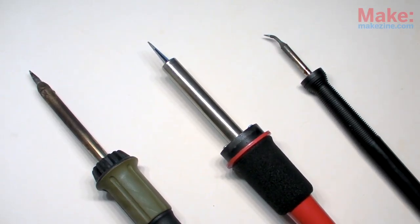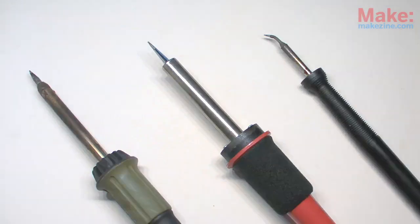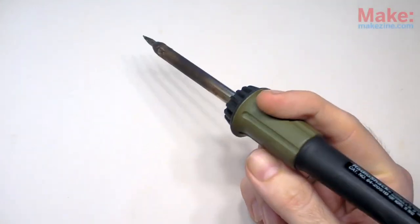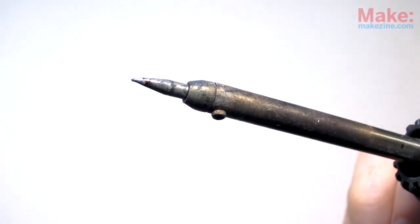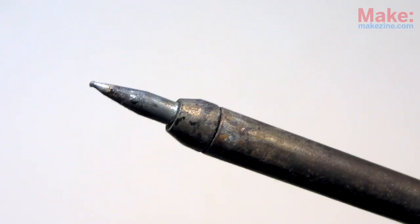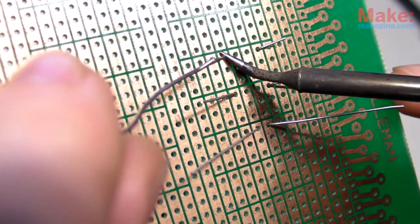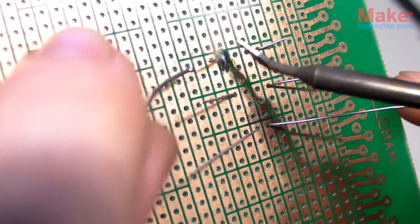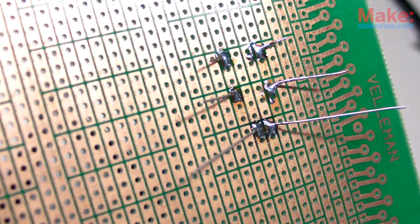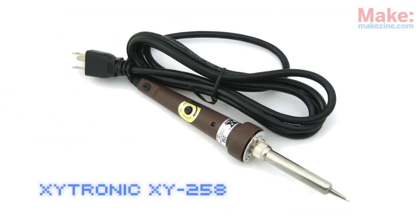If you consider soldering to be a frustrating process, chances are you're working with a low-quality iron. A good quality soldering iron and tip really do make a world of difference, and you don't have to spend a lot to get a good one. For about $20 USD, you can pick up a Zytranic XY258, a surprisingly high-quality tool for the price.